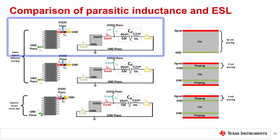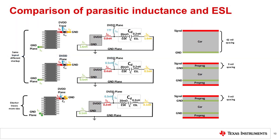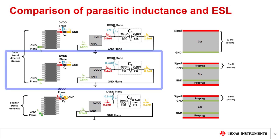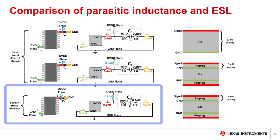This slide shows three example layouts. The first uses a two-layer board with a thick 62 mil dielectric, so any via will have a lot of inductance. Furthermore, the trace connecting between the capacitor and DVDD is long and thin, so the parasitic inductances from the trace and via are large compared to the capacitor's ESL. The second example uses a four-layer board, which helps minimize the via and trace inductance. The last example uses shorter traces and multiple vias, so the trace and via impedances are now more in line with the ESL of the capacitor.